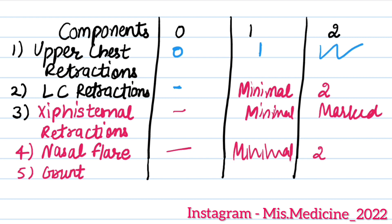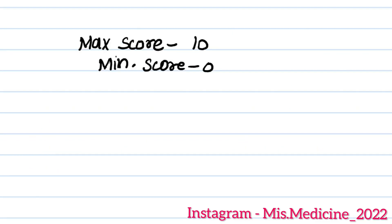Next one is grunting. If it's not present, zero score. If it is audible only with the stethoscope, then it is one score. If it is audible without the stethoscope, then it's marked two. And Silverman Score has a total score of ten, minimum score is zero.